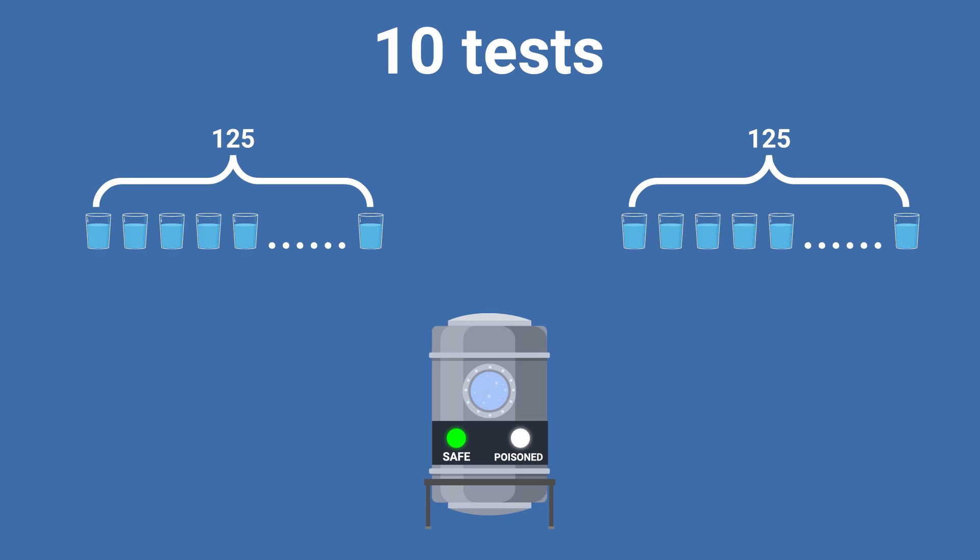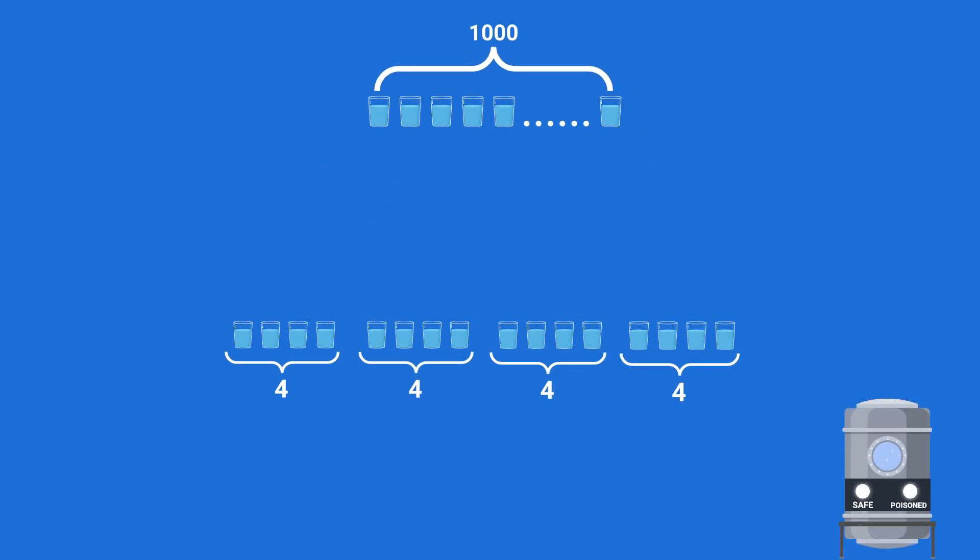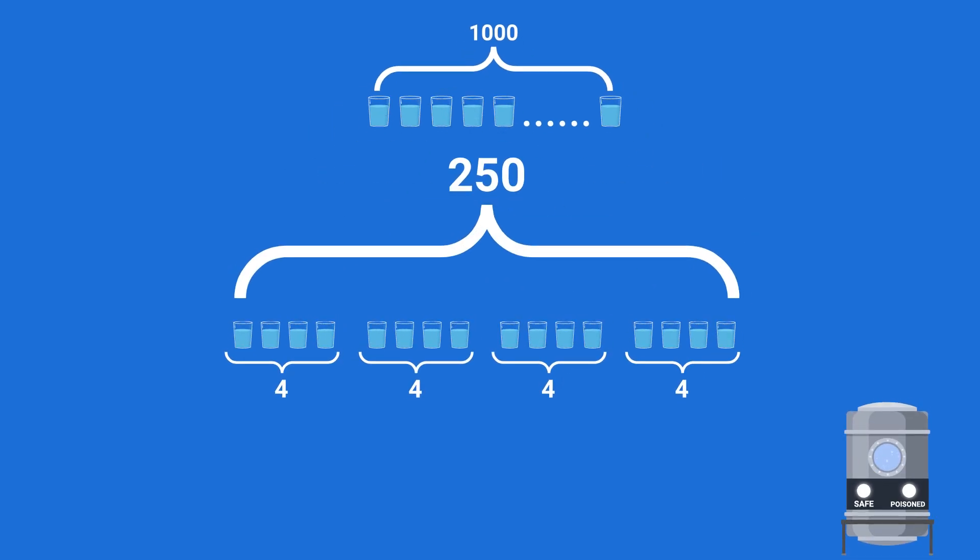I decided I'm just going to tell you the exact method with numbers now, and then I'm going to explain how these numbers are found after. So the first thing we're going to do is take the thousand drinks and divide them into groups of four, which means there will be 250 groups in total. We'll then take a sample from each drink in the first group and run a test. And then we'll repeat this for every single group.